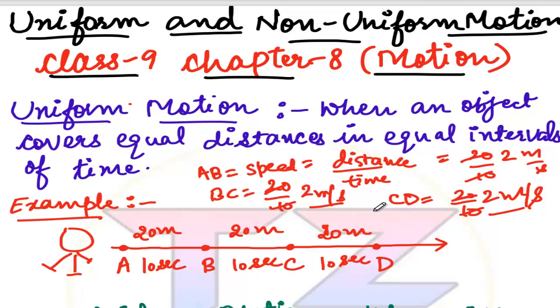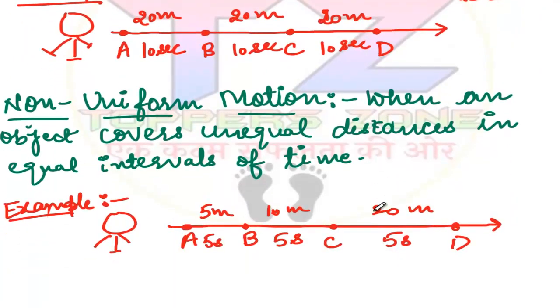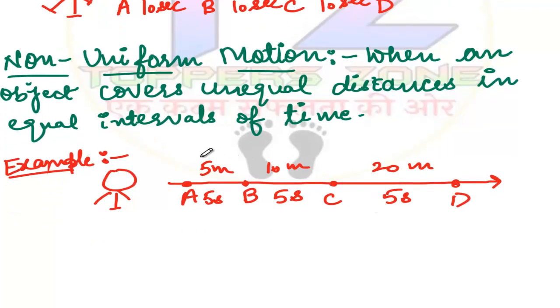Next is Non-Uniform Motion. When any object covers unequal distance in equal intervals of time, then it is said to be non-uniform motion. For example, you can see here that earlier the gap was equal at 20-20 meters. Here the time is equal but distance is unequal. This type of motion is called non-uniform motion. The question arises: is the speed constant in this type of motion? No, it's not constant.